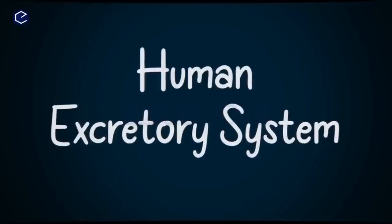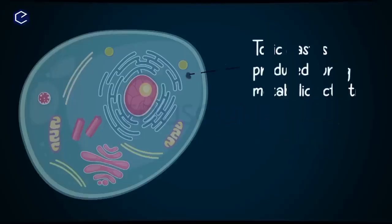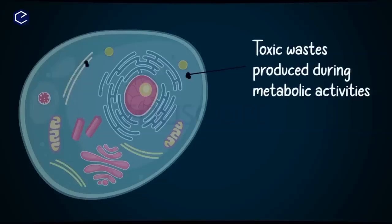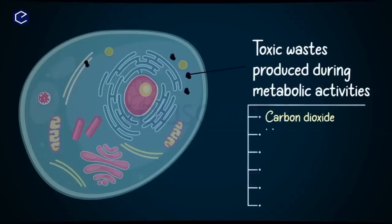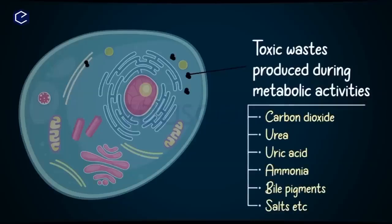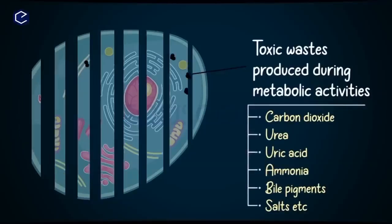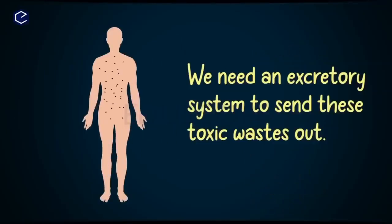Now we will discuss the human excretory system. Cells, while carrying out their activities, produce toxic nitrogenous substances like urea and uric acid. These compounds must be eliminated from our body. This job is done by the excretory system.